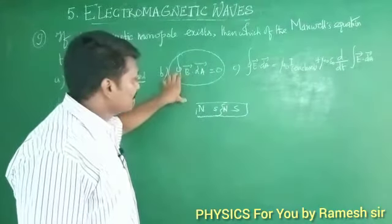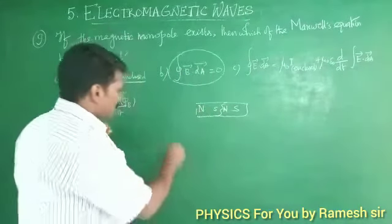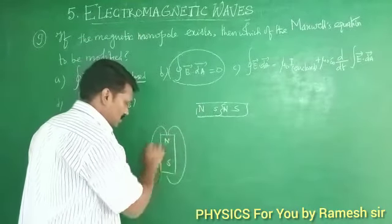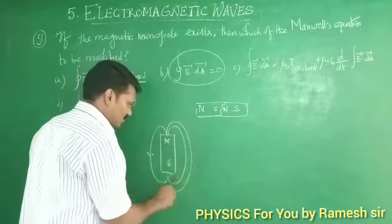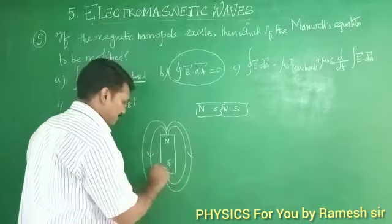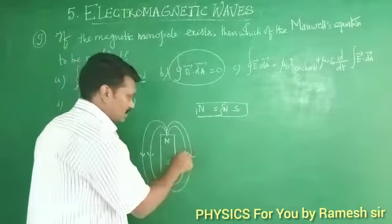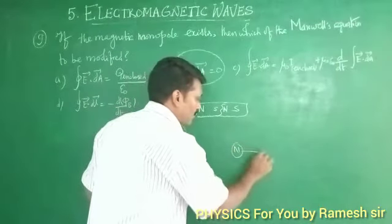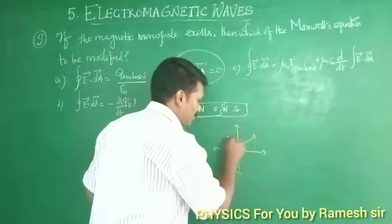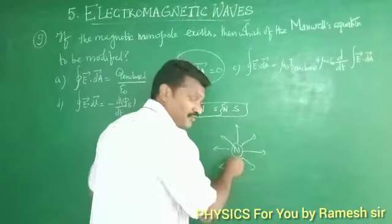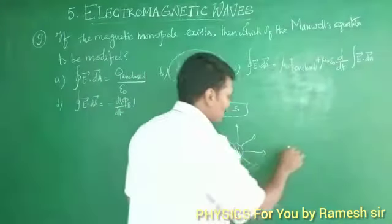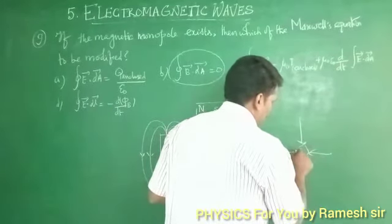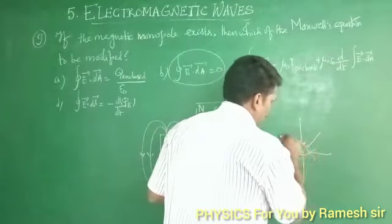If you have a closed surface in the area, you can see a bar magnet with north and south. This is a closed surface. Suppose if there is a monopole, if there is a north pole,